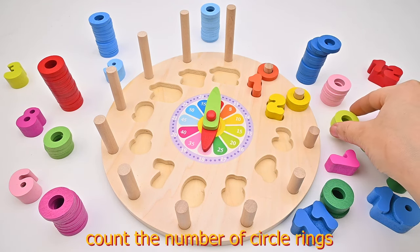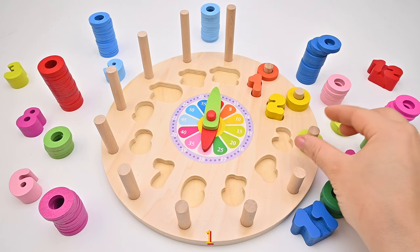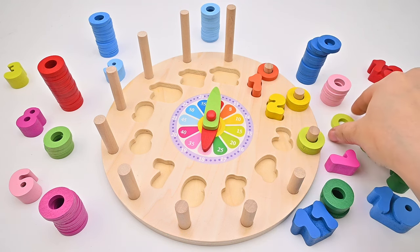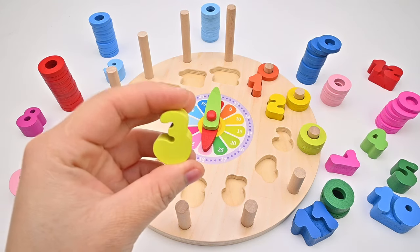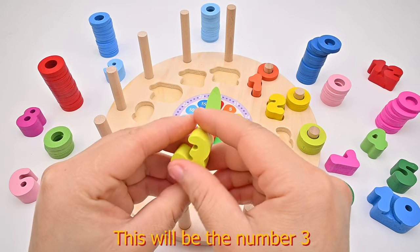On the small circle is the number 15. Count the number of circle rings. 1, 2, 3. There are 3 rings. This will be the number 3.